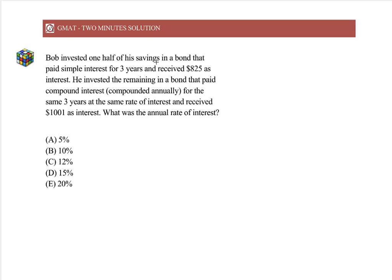Bob invested one-half of his savings in a bond that paid simple interest for three years and received $825. This is the total simple interest he got.